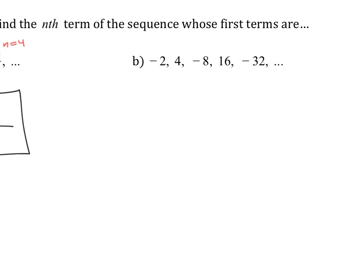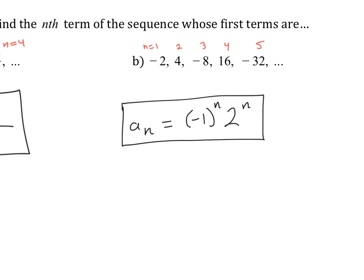Looking at the next example, we again see an alternating pattern between positive and negative, which we achieve with negative 1 to the power of n. When n is odd the result stays negative; when n is even the negatives cancel and it becomes positive — exactly what we want. For the doubling pattern, since it doubles each time it's an exponential function: base 2 to the power of n. You can verify: 2 to the first, 2 squared, 2 cubed, 2 to the fourth, 2 to the fifth — and this gives us the nth term.